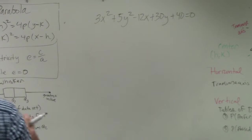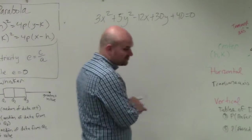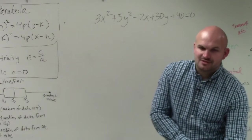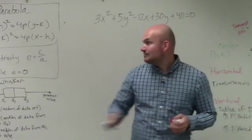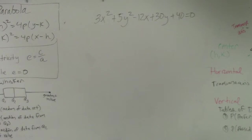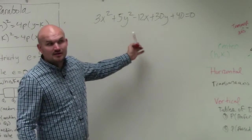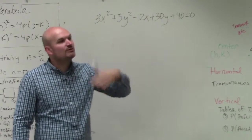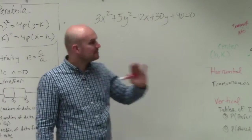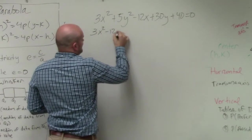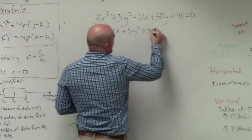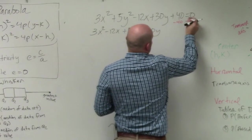In this problem, what I'm asking you to do is not only complete the square, but also find the foci, the center, the vertices, and the co-vertices. Now, if you look at my two equations over here, those have binomial squared. This equation does not have any binomial squared at all. So what we need to do is create a binomial squared by creating perfect square trinomials. The first thing you want to do is group your x's and group your y's: 3x² minus 12x plus 5y² plus 30y, and then subtract the 40 so it's on the other side.